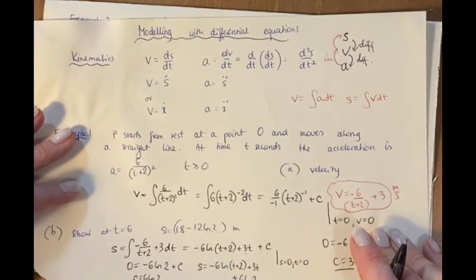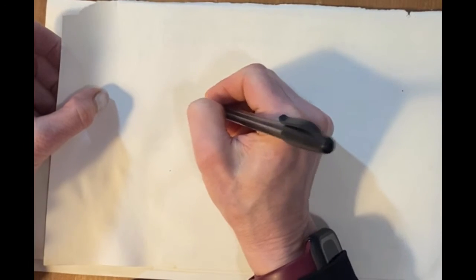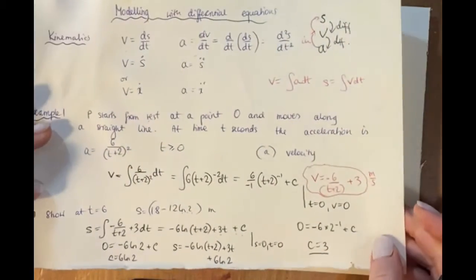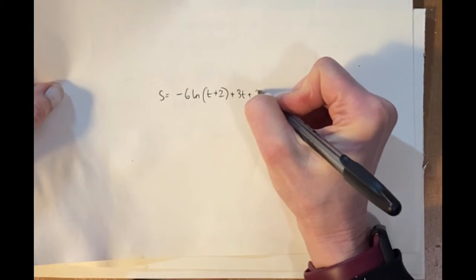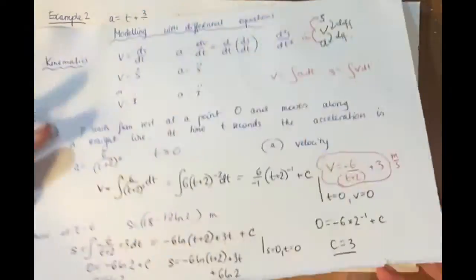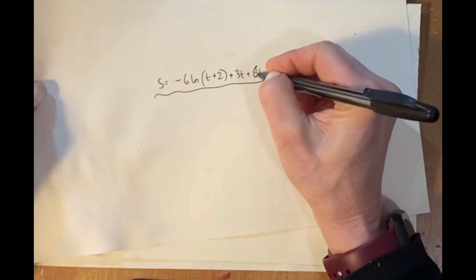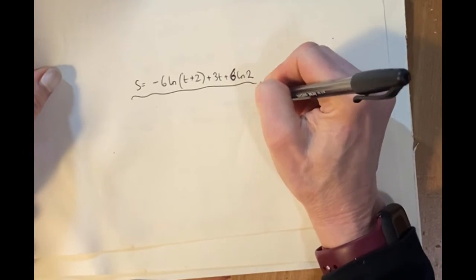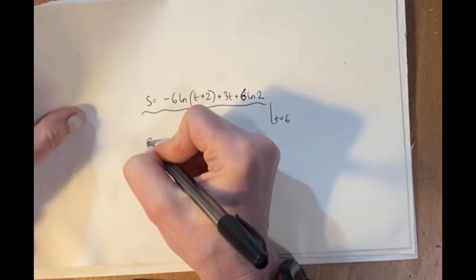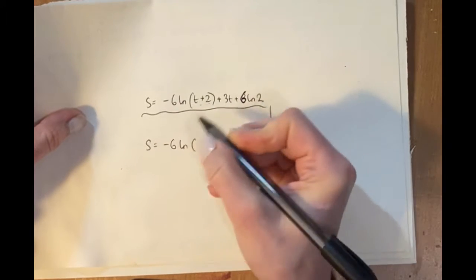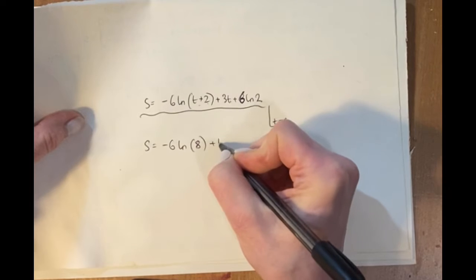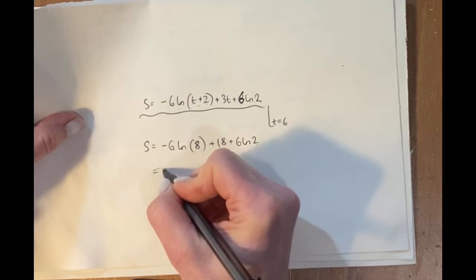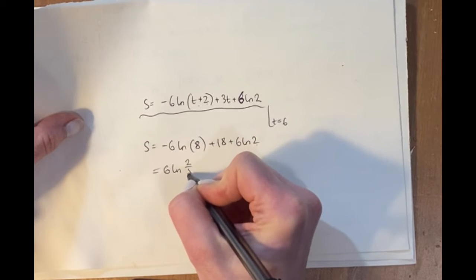Now substituting t = 6: s = −6 ln(8) + 3(6) + 6 ln 2 = −6 ln 8 + 18 + 6 ln 2. Combining the logarithm terms: 6 ln(2/8) + 18 = 6 ln(1/4) + 18.